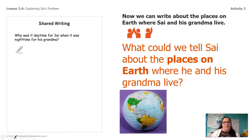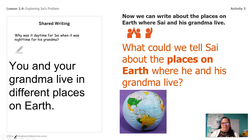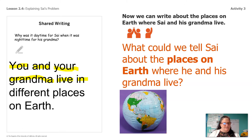From all that research we did, we learned something about the places on earth that Psy and his grandma live. What did we learn about the places on earth that must be true in order for it to be daytime for Psy and nighttime for his grandma? What did we figure out that we didn't know before? Psy and his grandma live in different places on earth. So this is what we'll write to Psy: 'You and your grandma live in different places on earth.' Let's read it all together: You and your grandma live in different places on earth.